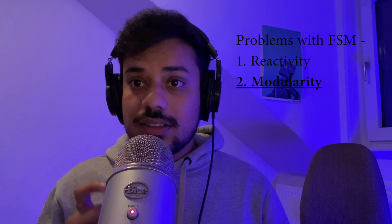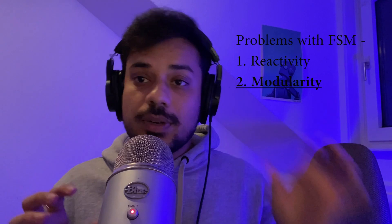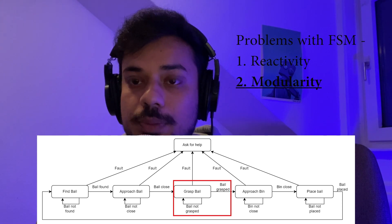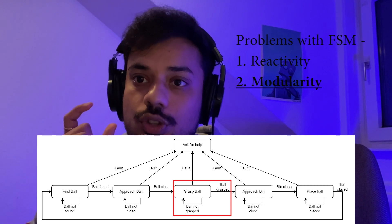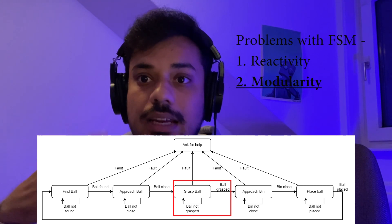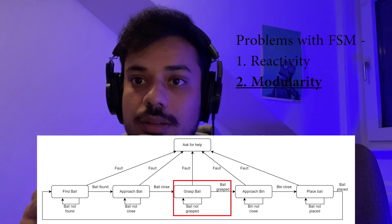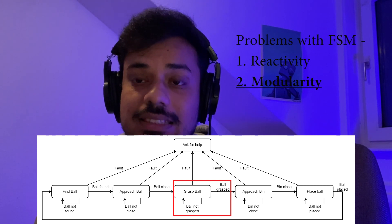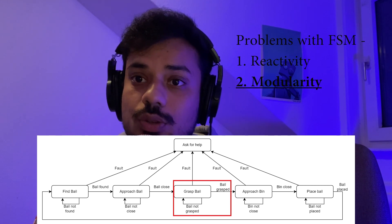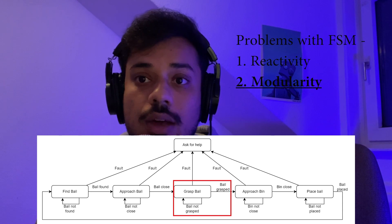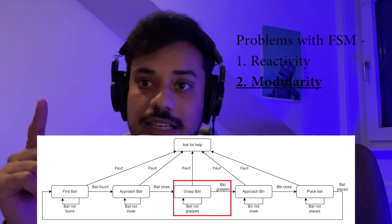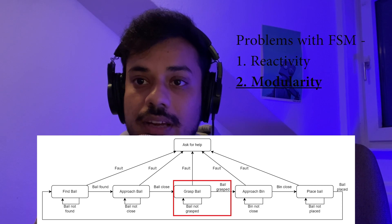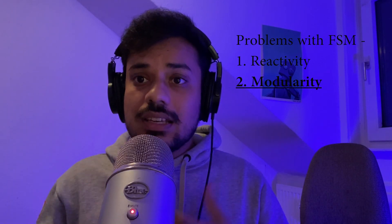The second problem is modularity. One state in a finite state machine is not decoupled from the previous state and the next state. For instance, grasp ball is supposed to be connected to approach ball and approach bin. If for some reason you want to use this state again, you cannot use it as-is because it is not modular — it will have code which at least indirectly depends on the previous and next state. You will have to make changes to check if the next or previous state is this or that, making the system a mess.